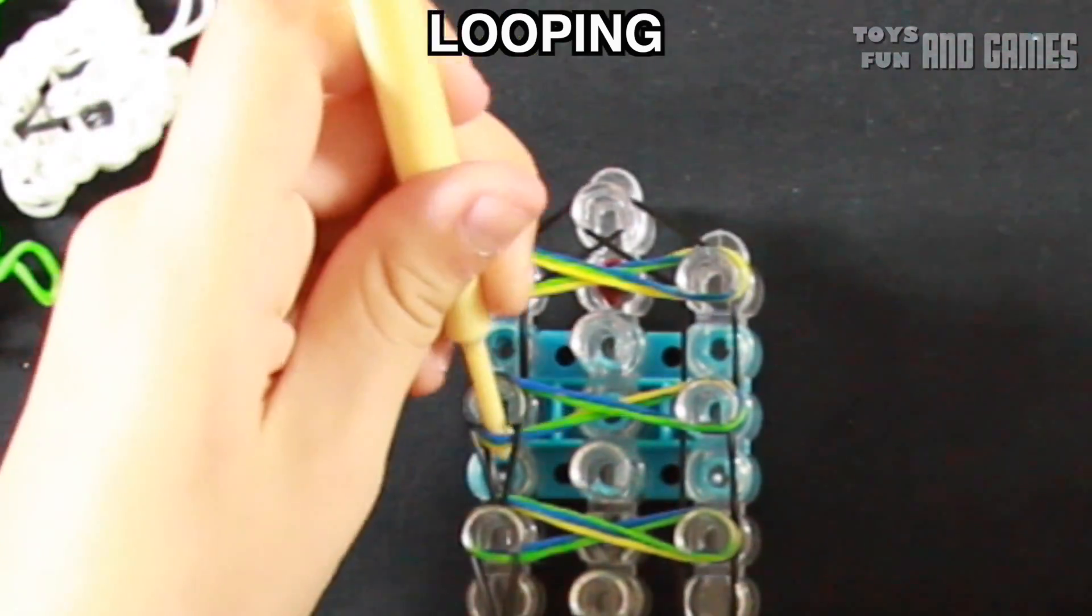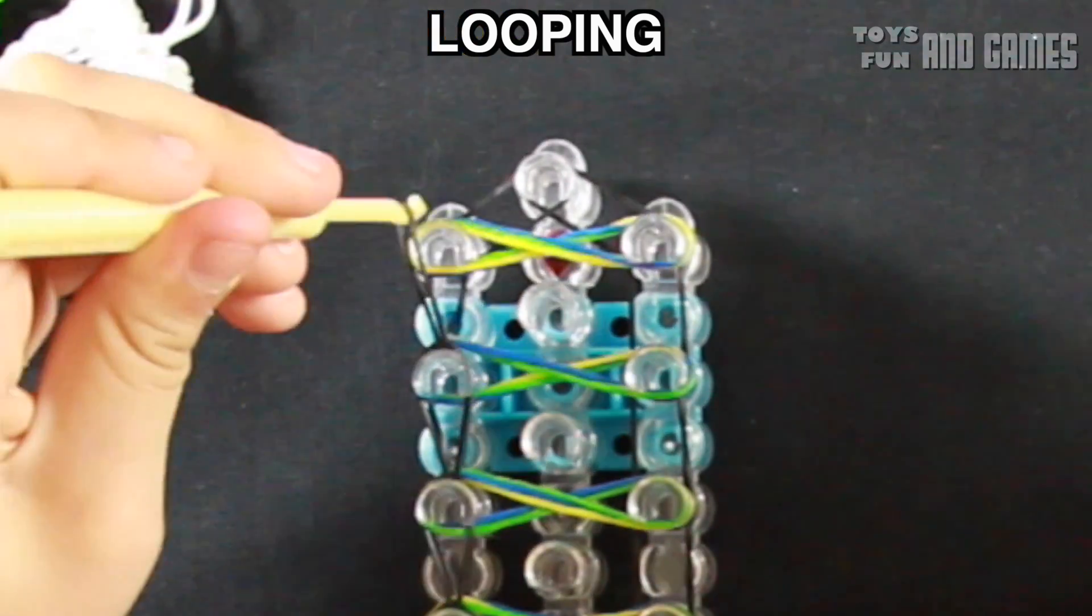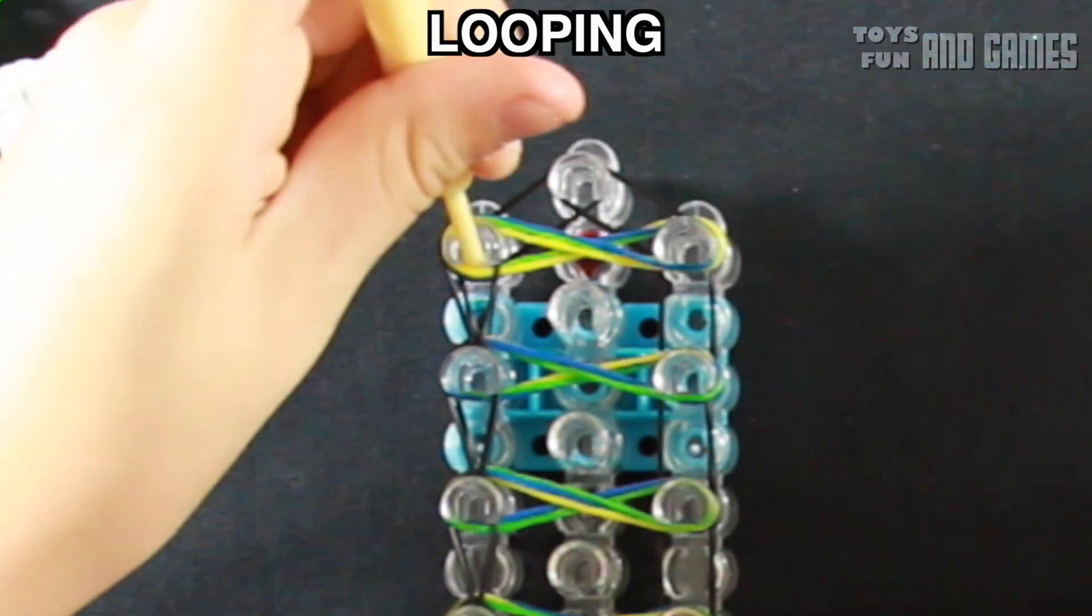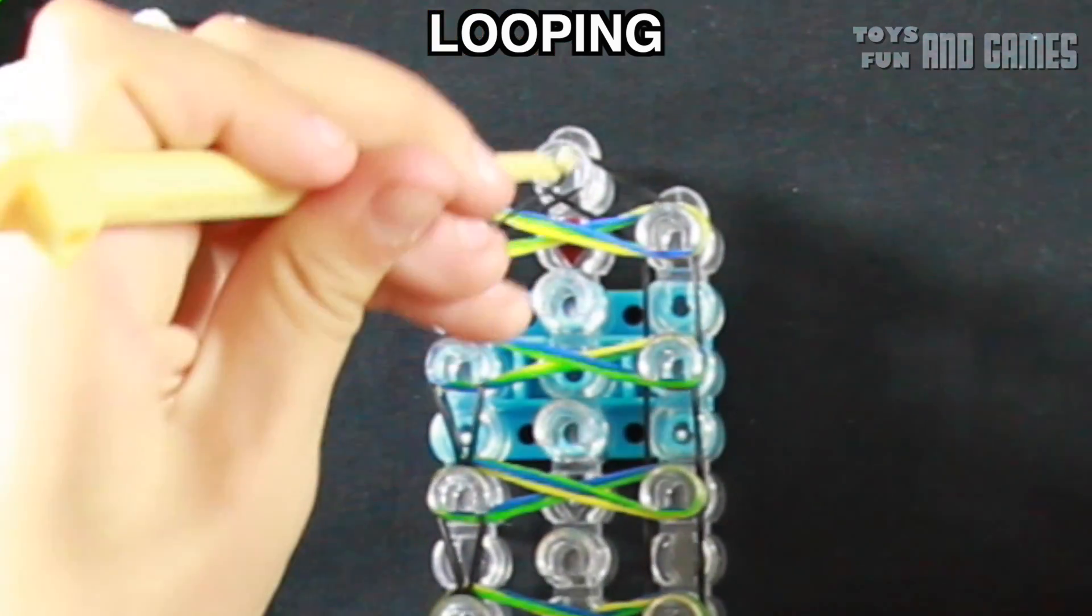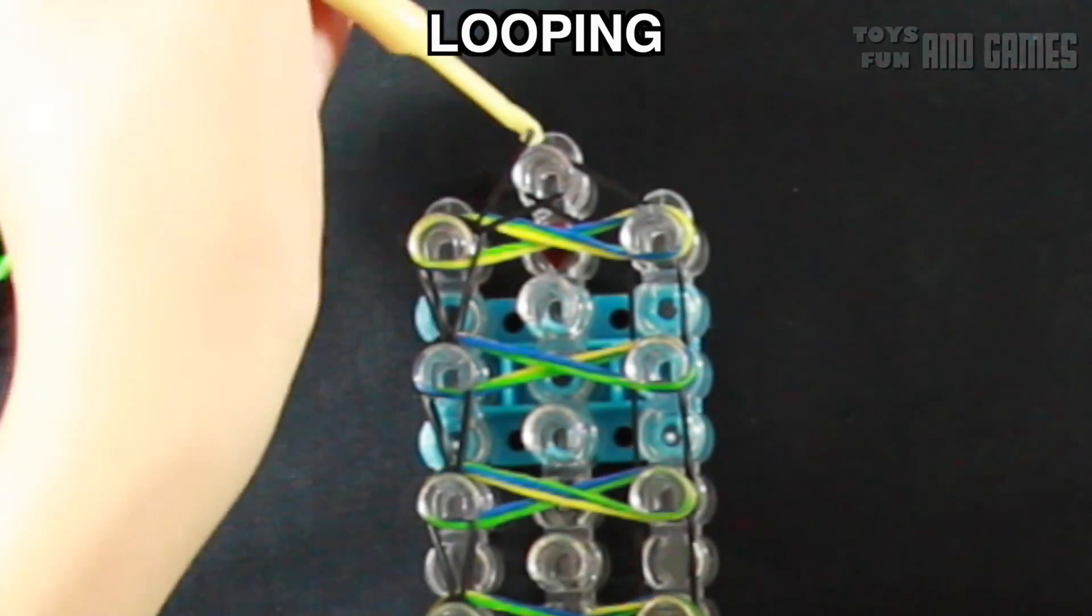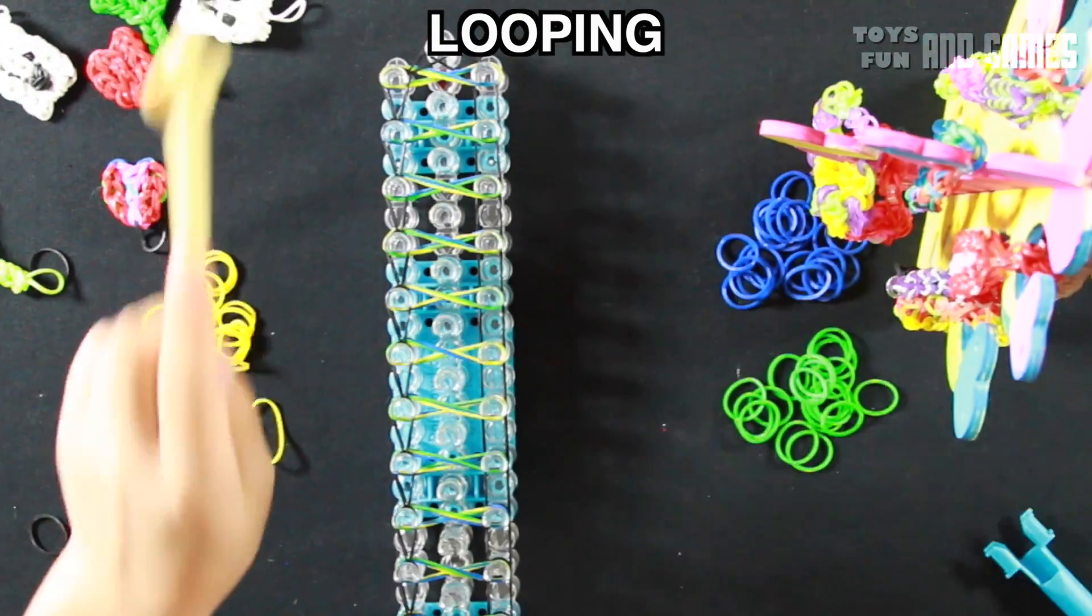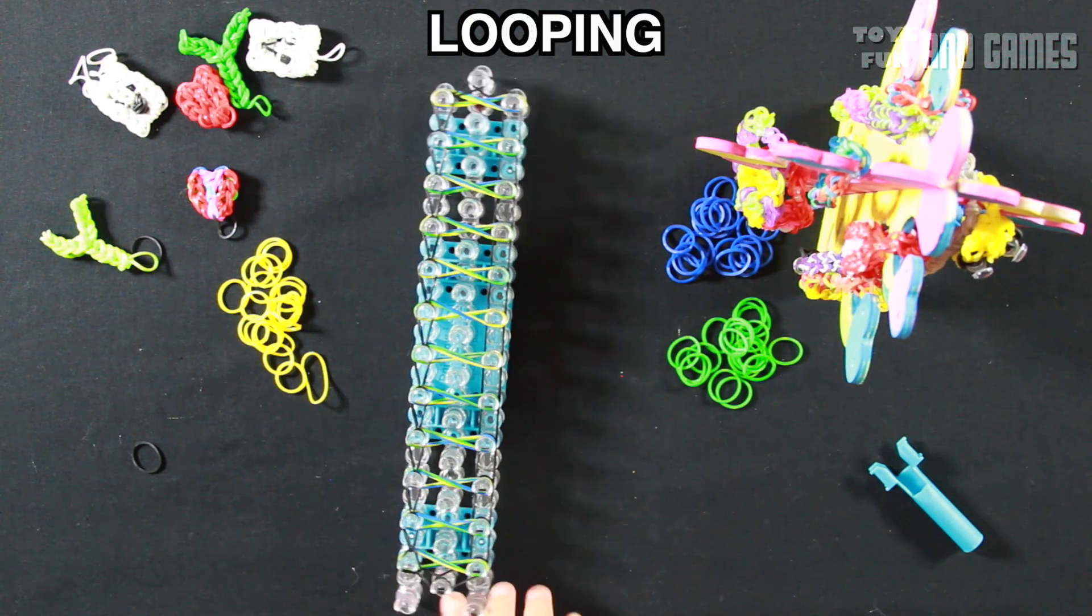And here we reach the end of the loom. Our last one, and then grab the bottom one, and pull it to your right. It should look like this, but we have to go all the way to the beginning, and then loom our other side.